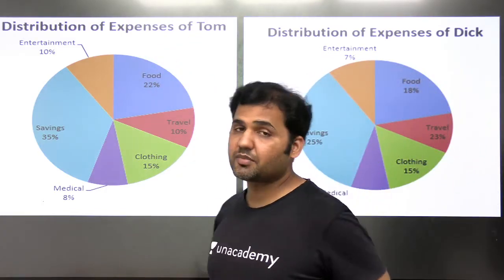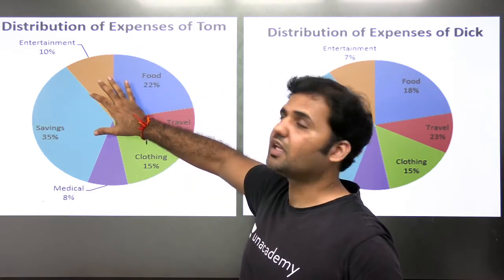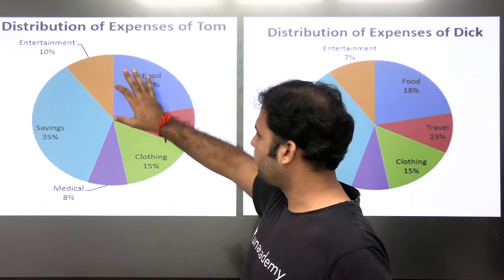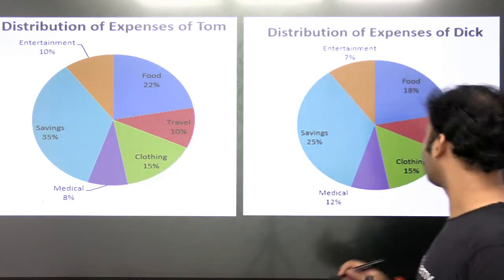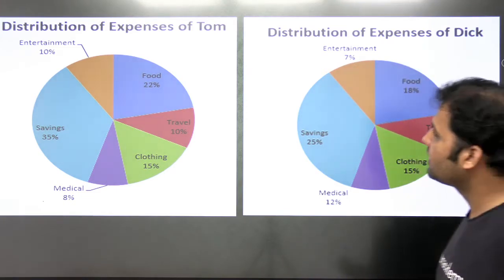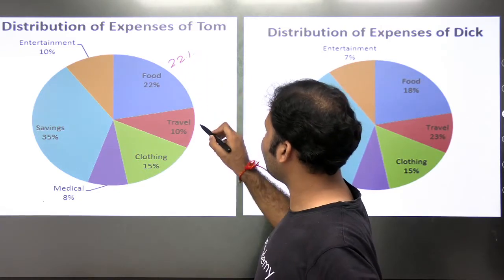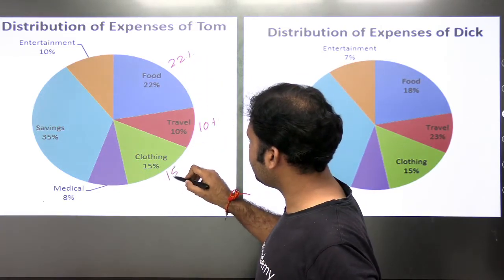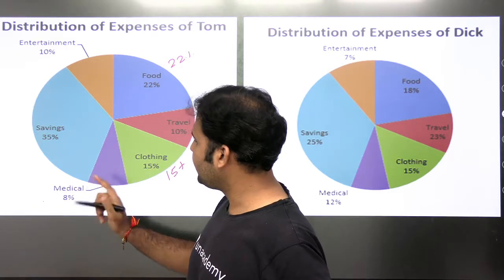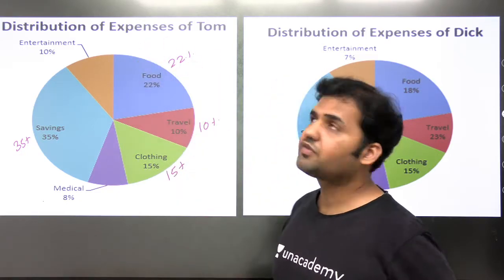This is the distribution of expenses of Tom — that means whatever is the income of Tom, this is how Tom is spending his income: 10% on entertainment, 22% on food, 10% on travel, 15% on clothing, 8% on medical, and 35% on saving. So this is the distribution of expenses of Tom.